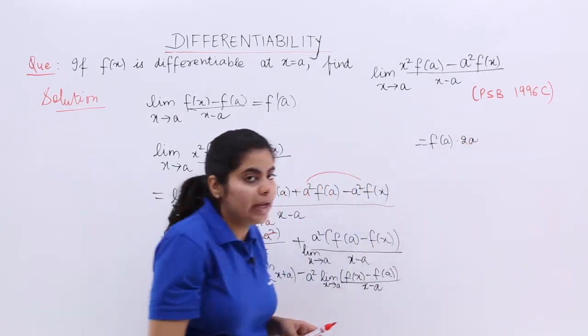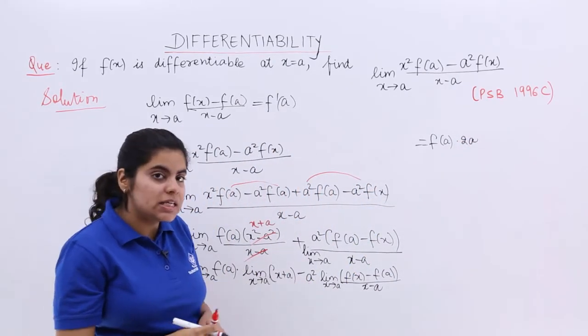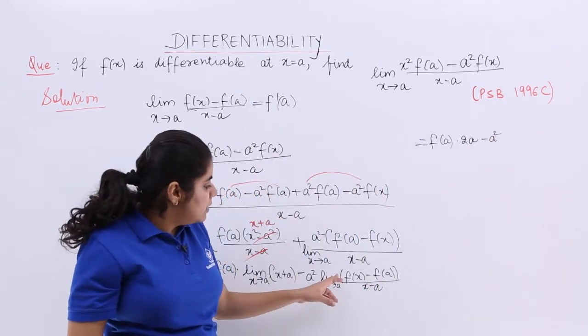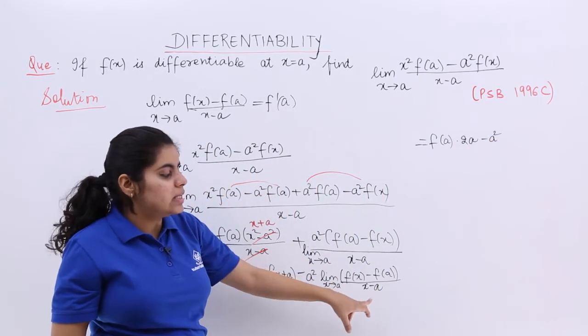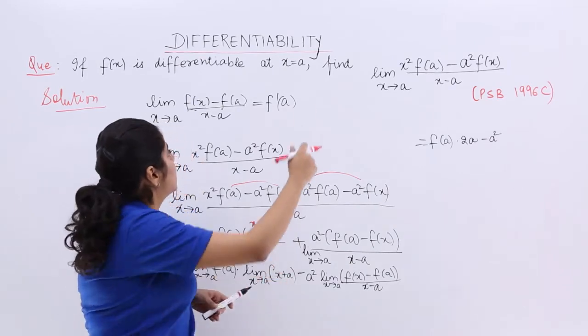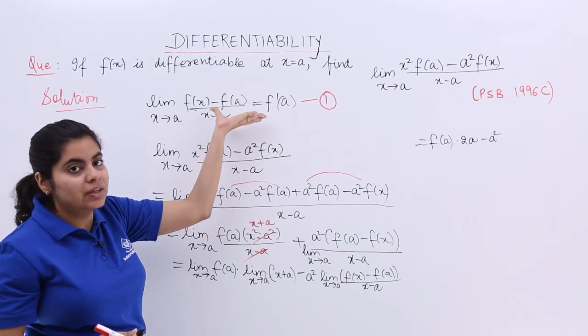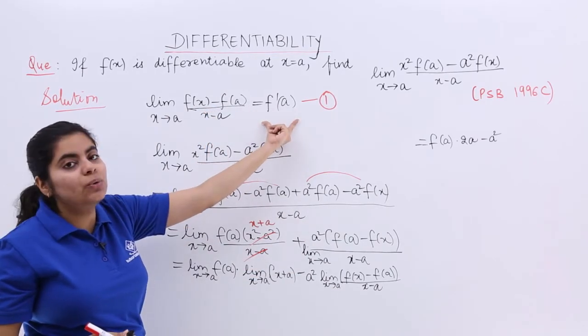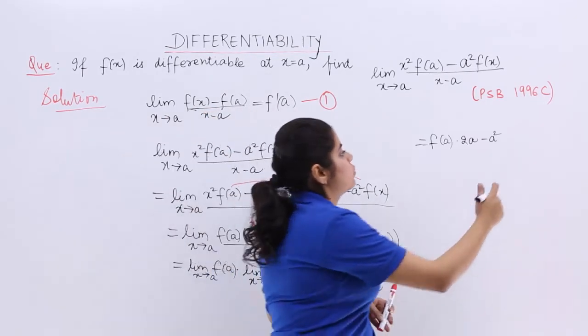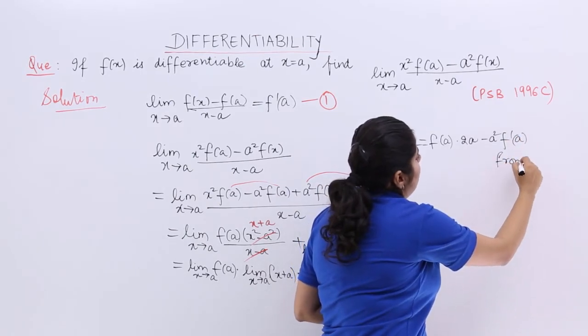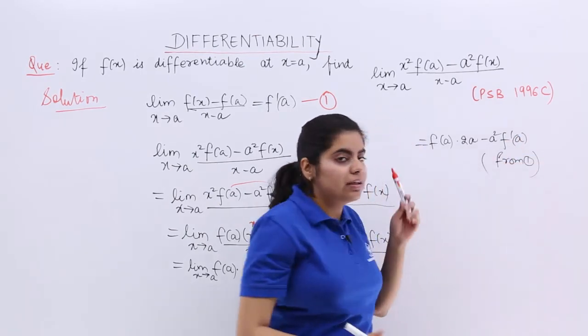So it is 2a. Next minus a². Next, limit x tends to a of [f(x) - f(a)]/(x - a). If I name this equation as 1, you see that this value is the same. I can substitute f'(a) directly. So I just write f'(a) and this is from equation 1, and that is my final value.